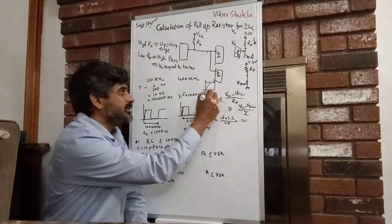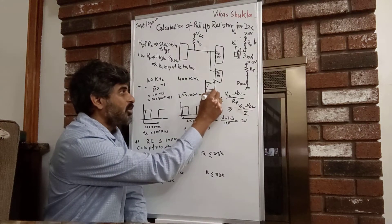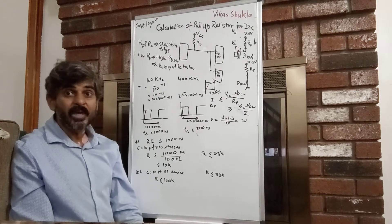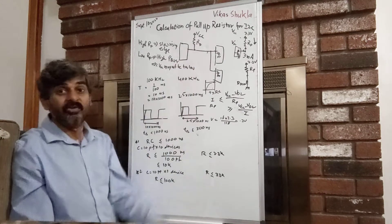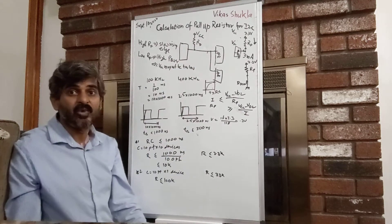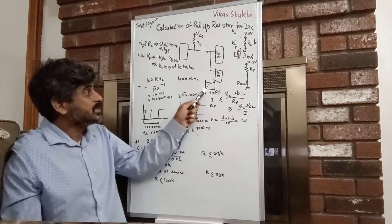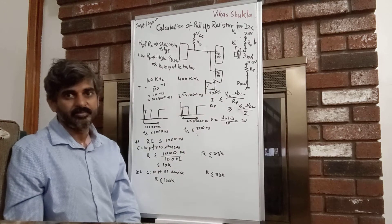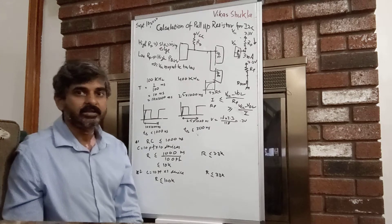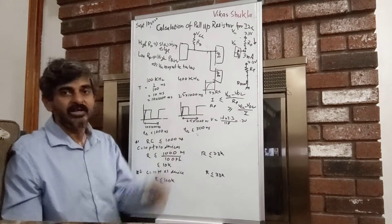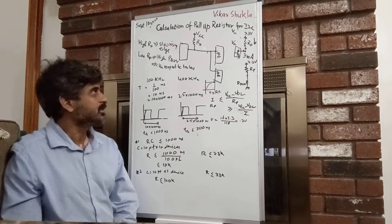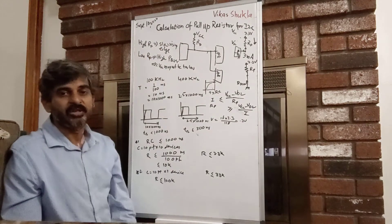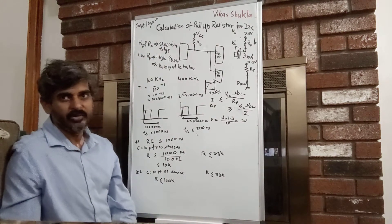This rise time will typically be of the order of R times C. If you make this resistor R very high, like 1 megaohm, the signal will be so slow that it will deform the clock and data, and the receiving device could misinterpret the bus. So that is the problem with a very high R value.